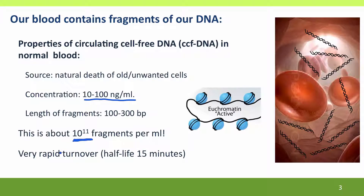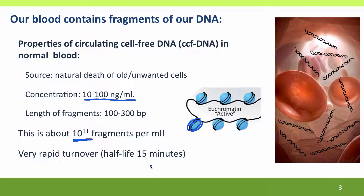The fragments are quite small. The size of the fragments is thought to correspond approximately to the amount of DNA that's wrapped around one nucleosome when the DNA is packaged in chromosomes. Most of this DNA turns over quite quickly in our blood — new DNA is constantly being produced and the existing DNA is constantly being cleared away, probably by our kidneys.